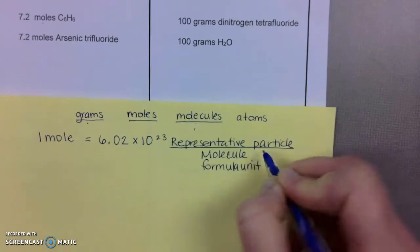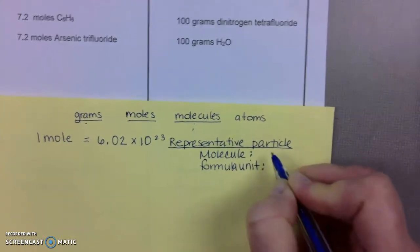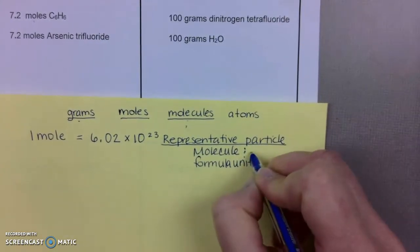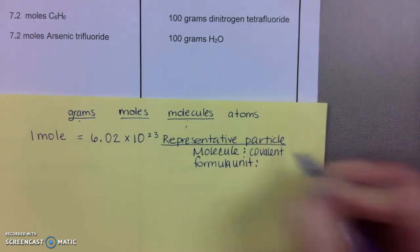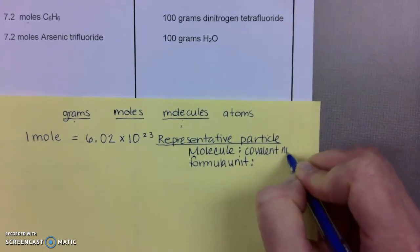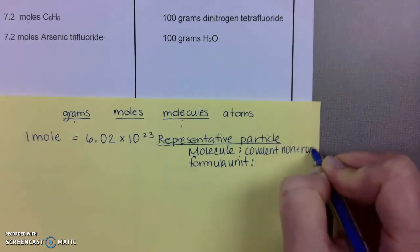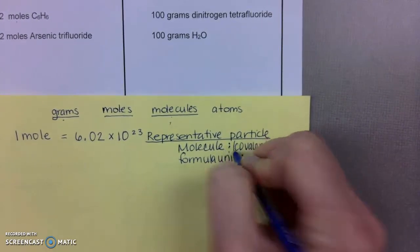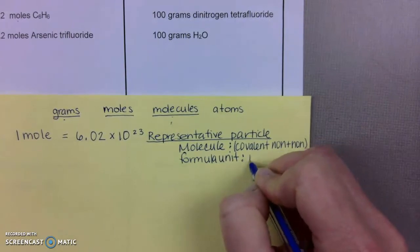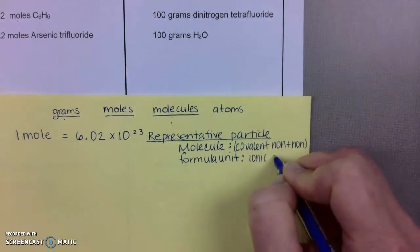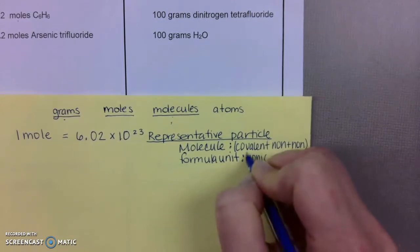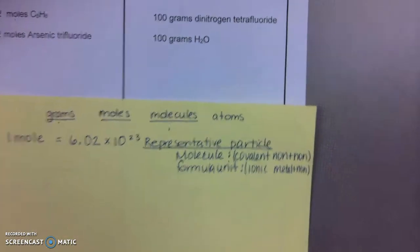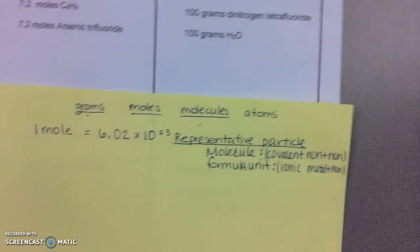That's a generic term for either a molecule or a formula unit. Let's quickly explain what those two vocab words mean again. A molecule is a covalent, and it is a non-metal plus a non-metal. Formula unit means an ionic compound, which starts with a metal and ends with a non-metal.